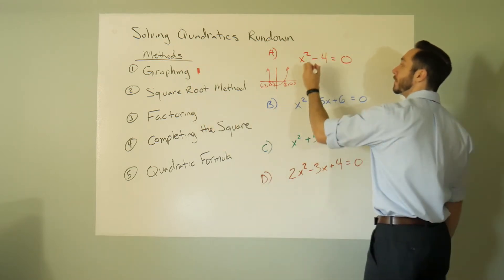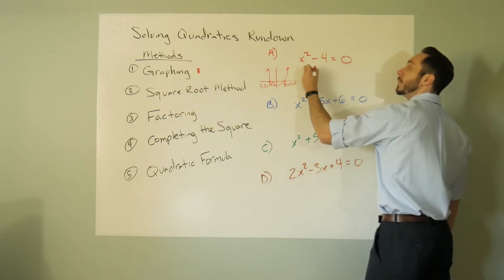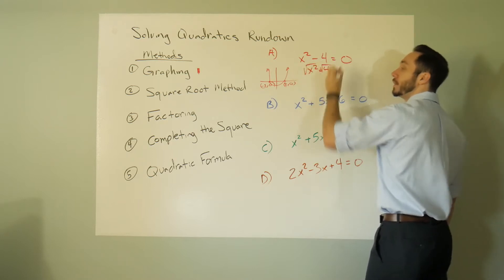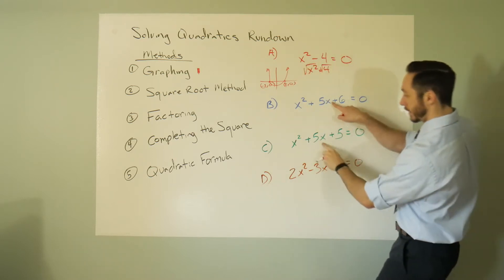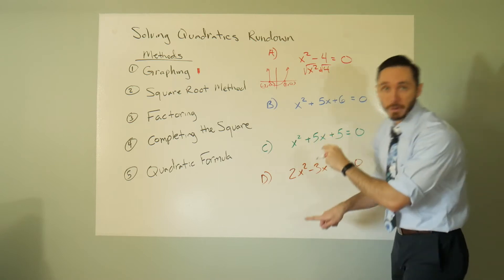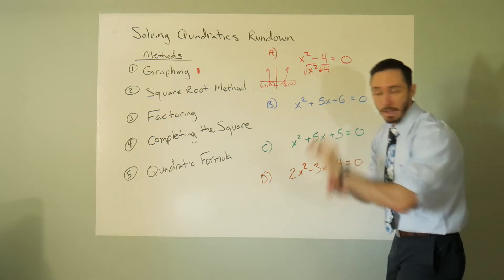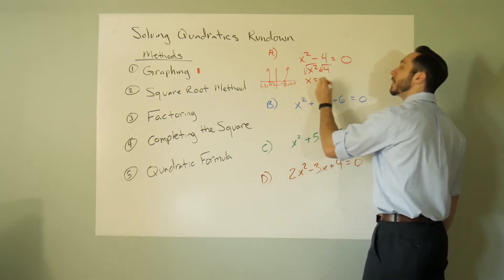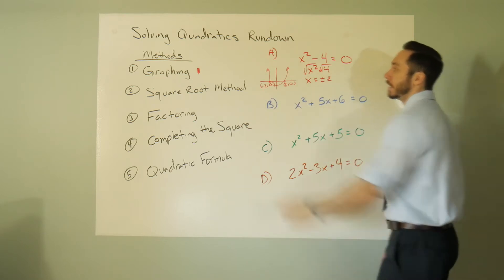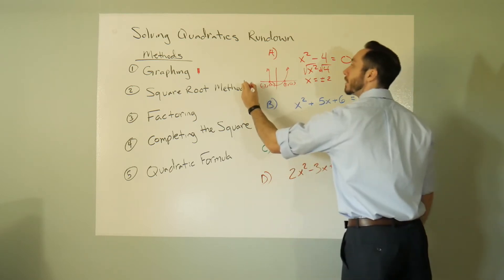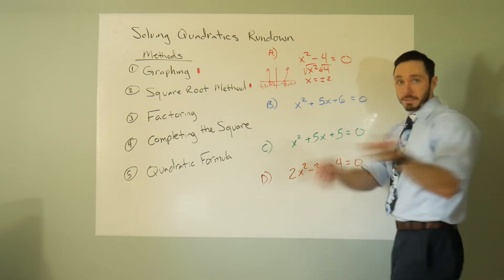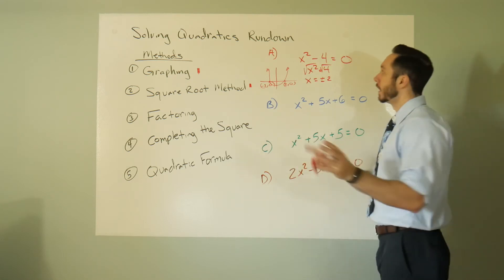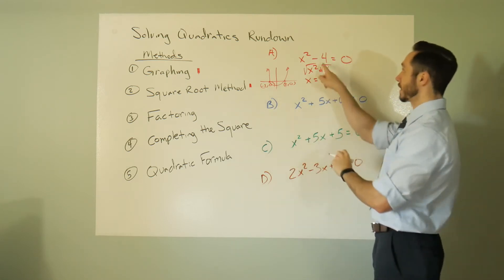The square root method only works when you have no linear term, so the moment you have one, square root method is out. But here there's no linear term, so you move the 4 to the other side and get x equals plus or minus 2. Square root method works here.